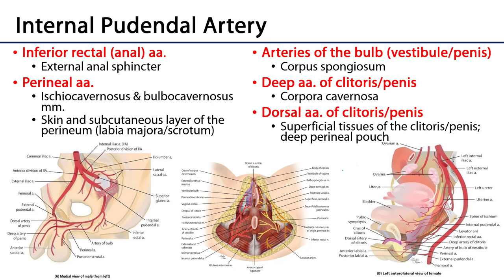Let's take a closer look at the internal pudendal artery. It is going to leave the pelvis, exit through the greater sciatic foramen, and then pass through the lesser sciatic foramen, heading through the pudendal canal — also called Alcock's canal. It will be joined by the pudendal nerve as well as the internal pudendal vein within that canal.